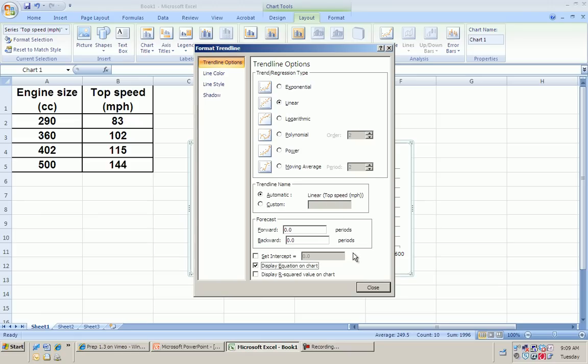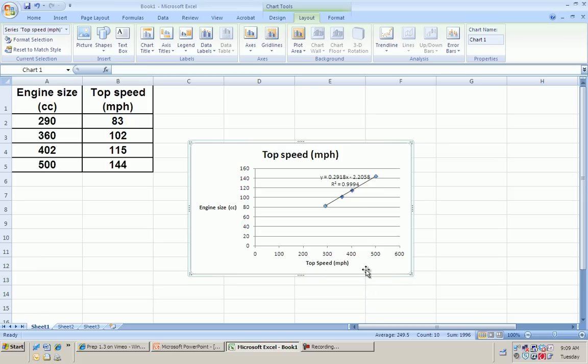It looked linear to me, so I'm going to give that a shot. I'm going to display the equation and display the R squared value. And then I'm going to move this so it's more readable. OK. So 0.99999994. Oh, that's pretty.